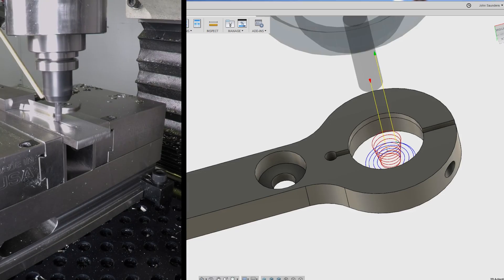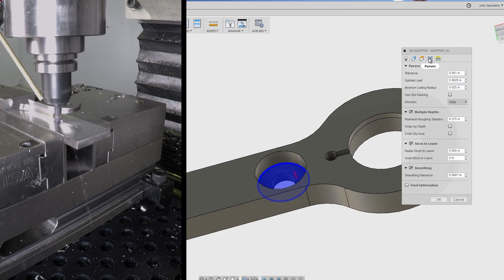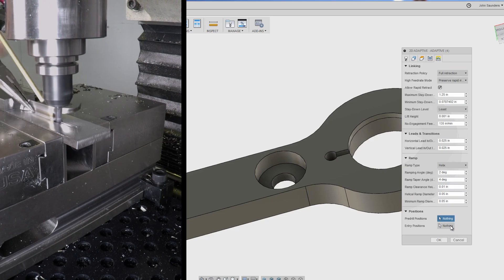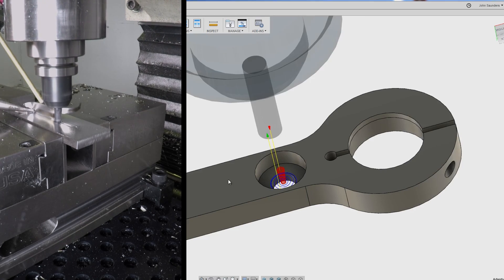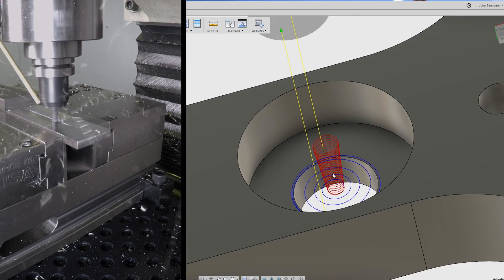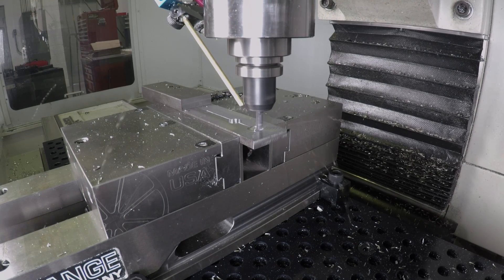As we ramp into this small hole, same tool settings, nothing changed, one big difference. Under the linking tab, add a ramp taper angle, and that creates a tapered ramp down that helps with chip evacuation. Same thing on the larger slot.